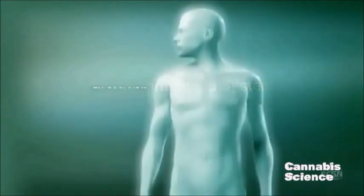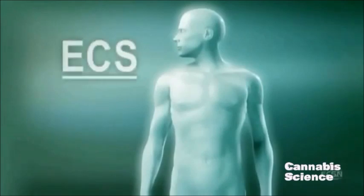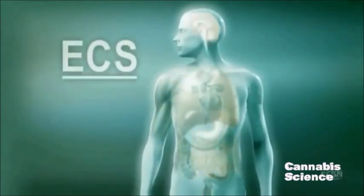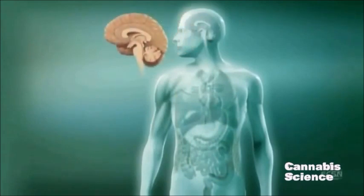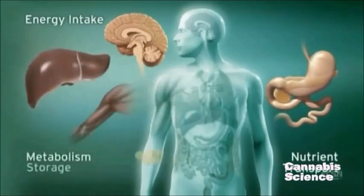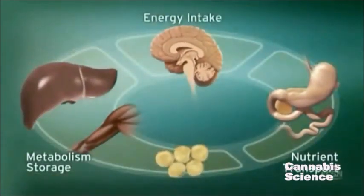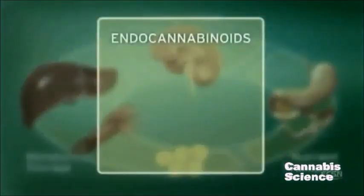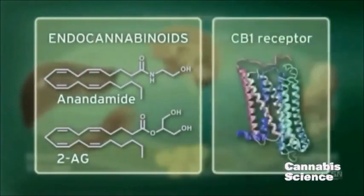The endocannabinoid system, or ECS, influences multiple physiologic processes. This intricate system modulates energy intake, as well as nutrient transport, metabolism, and storage. The ECS regulates these processes through endogenous ligands, such as anandamide and 2-arachidonylglycerol, and the CB1 receptor.